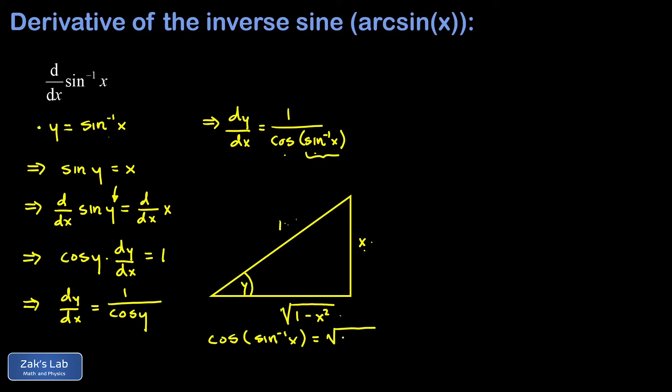Finally, I can write down the derivative I was looking for. dy/dx was 1 over the cosine of the inverse sine of x, but that turned out to be the square root of 1 minus x squared. And I have my formula for the first derivative of an inverse sine function.